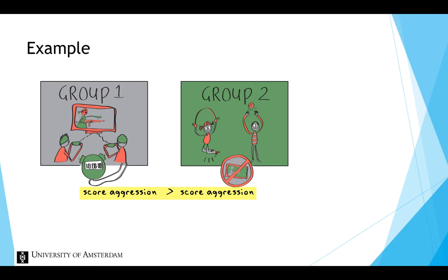But still, this is not a very strong claim because there are many alternative explanations for the difference in aggression between the two groups. What if the children in the violent video game group were more aggressive to start with? What if there were fewer girls in this group or older children?